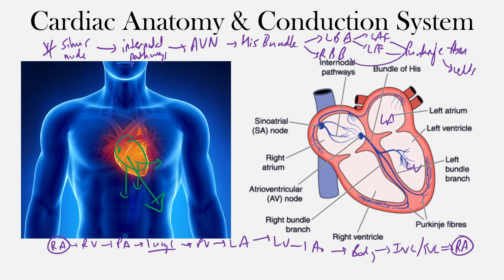The main focus will be the electrical system, but anatomy plays a huge role in how we assess the EKG and can really help when we start to localize different features — such as ischemia — on the EKG.